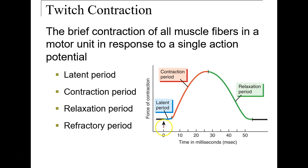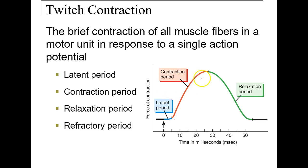Twitch contraction: a nerve sends an action potential or impulse and this causes the muscle to have a quick contraction — a twitch. We have a latent period, which is more of a relaxed state, then contraction, then relaxation, and finally a refractory period in which we cannot have another contraction.